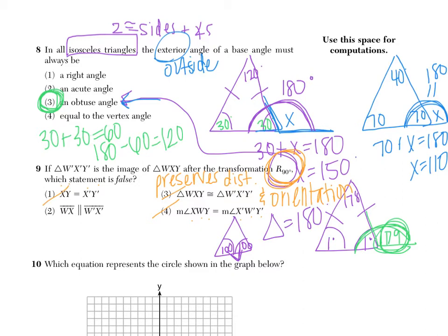Now in the next one, it says that WX is supposed to be parallel to the primes. When you rotate, it's not like a reflection. And so parallelism is not necessarily preserved between the preimage and the image. So here, let's say that we take this right triangle, W, X, Y, and we rotate it 90 degrees. So that means it's going to look something like this. Where X prime is here, Y prime here, W prime here. It's rotated 90 degrees.